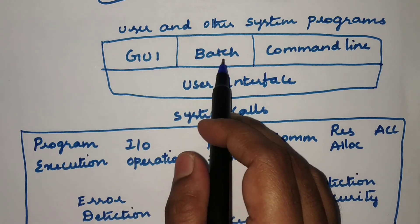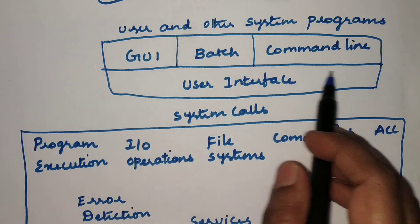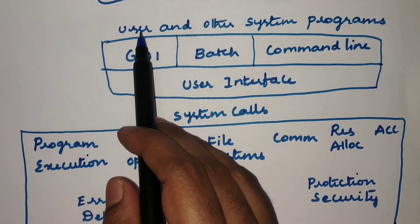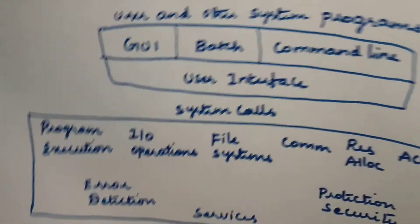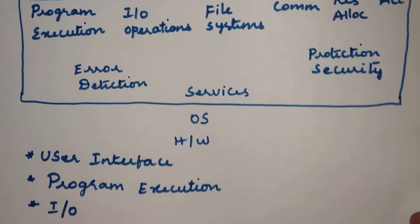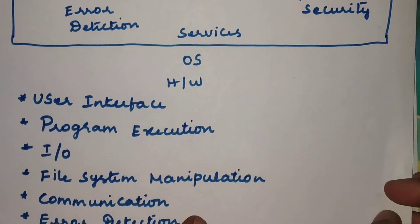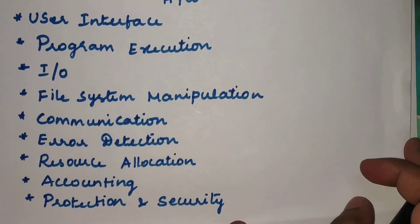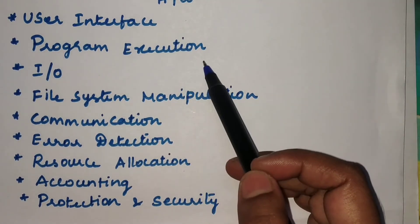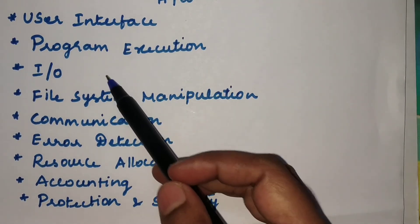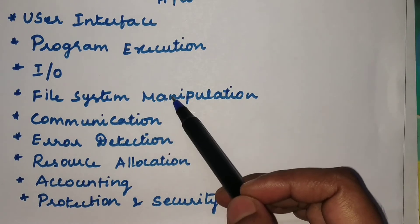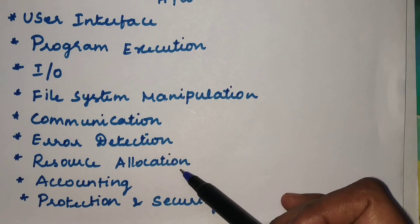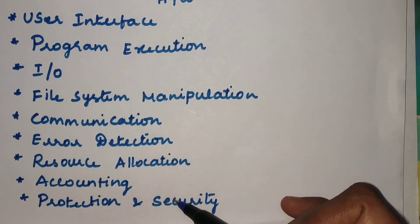The available interfaces are: graphical user interface, batch interface, and command line interface. In the top layer we have the user program and other system programs. The main services provided by the operating system are: user interface, program execution, IO operation, file system manipulation, communication, error detection, resource allocation, accounting, protection and security.